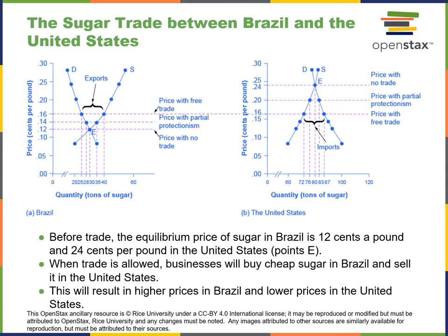An example: sugar trade between Brazil and the United States. Before trade, the equilibrium price in Brazil is 12 cents a pound and 24 cents a pound in the United States. Looking at point E in each country, the differences are considerable. When trade is allowed, businesses will buy cheaper sugar in Brazil and sell it in the United States naturally.